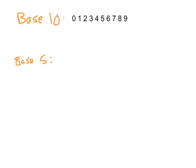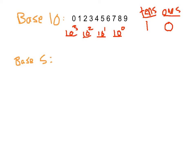Once we want to represent 10 objects, instead of having a new symbol, we go to the next column — from the ones place to the tens place. Using just these digits, 0 through 9, to represent the number 10, we write one 10 and zero ones. Numbers in base 10 start with the ones place, or 10 to the zero, then 10 to the first, then 10 to the second, and so forth.